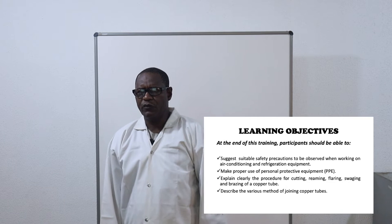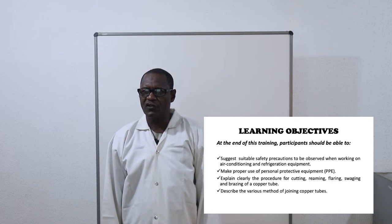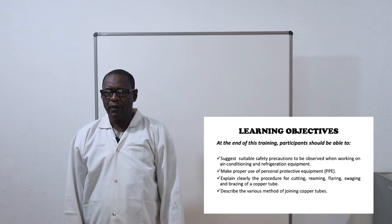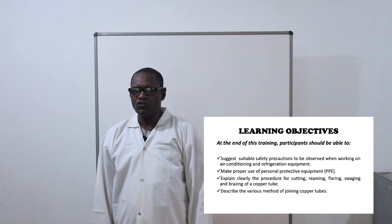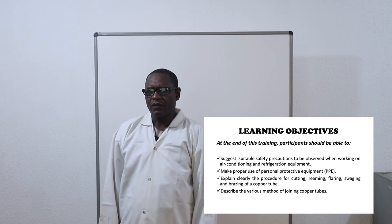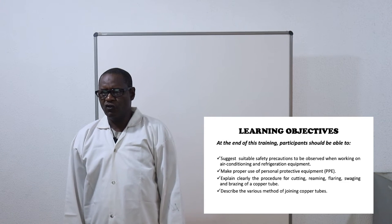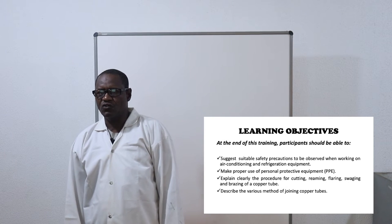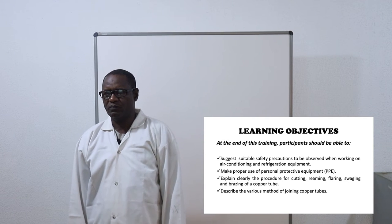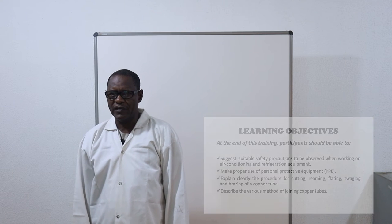The learning objectives are: one, suggest suitable safety precautions to be observed when working on air conditioning and refrigeration equipment; two, make proper use of personal protective equipment; three, explain clearly the procedure for cutting, rimming, flaring, swaging, and brazing of a copper tube; four, describe the various methods of joining copper tubes.